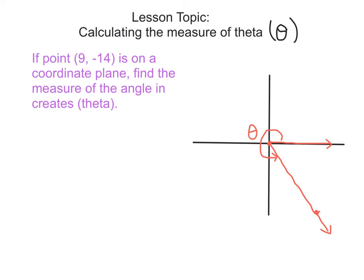Let's take a look at how it works. I'm going to label this angle here theta prime. We are going to create a right triangle using the point (9, negative 14), dropping toward the x-axis to create our right angle.